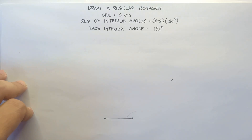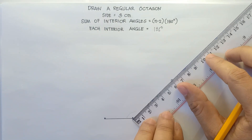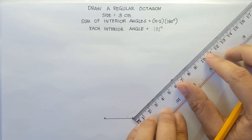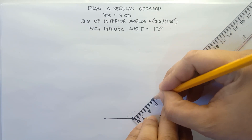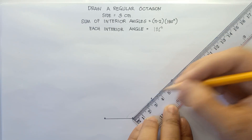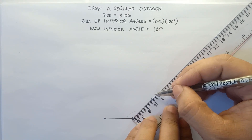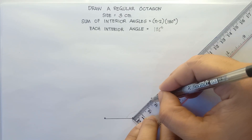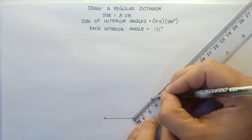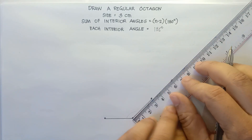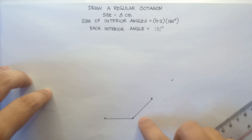So 3 centimeters for the second side. This will be the last point. You can sketch this with a ball pen. We have 3 centimeters. Our given side is 3 centimeters. From this last point, align 0 on this particular second side.